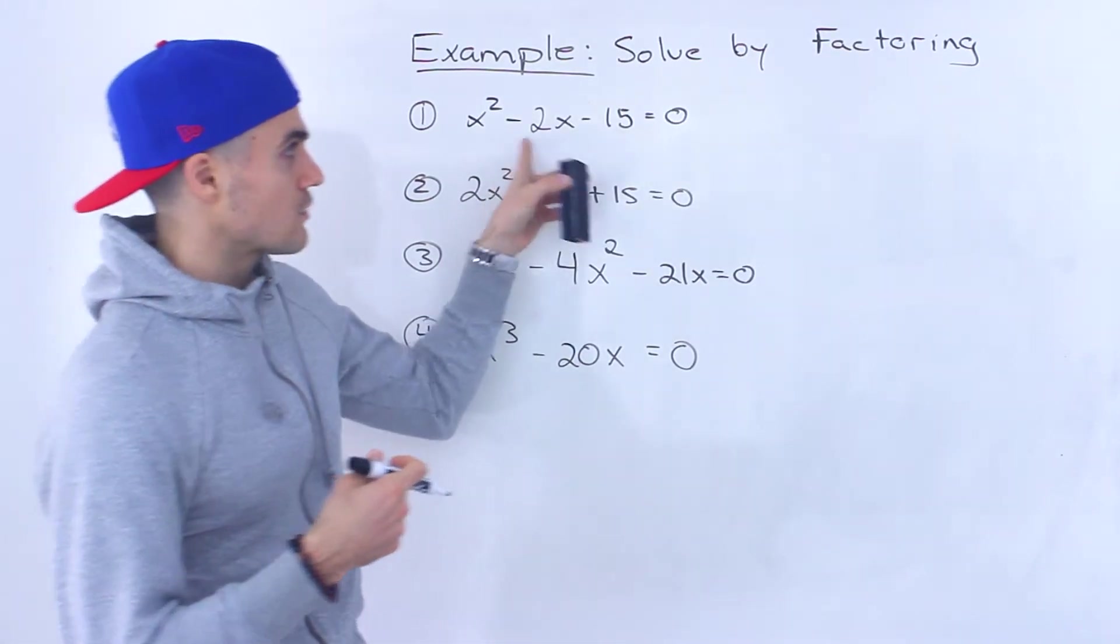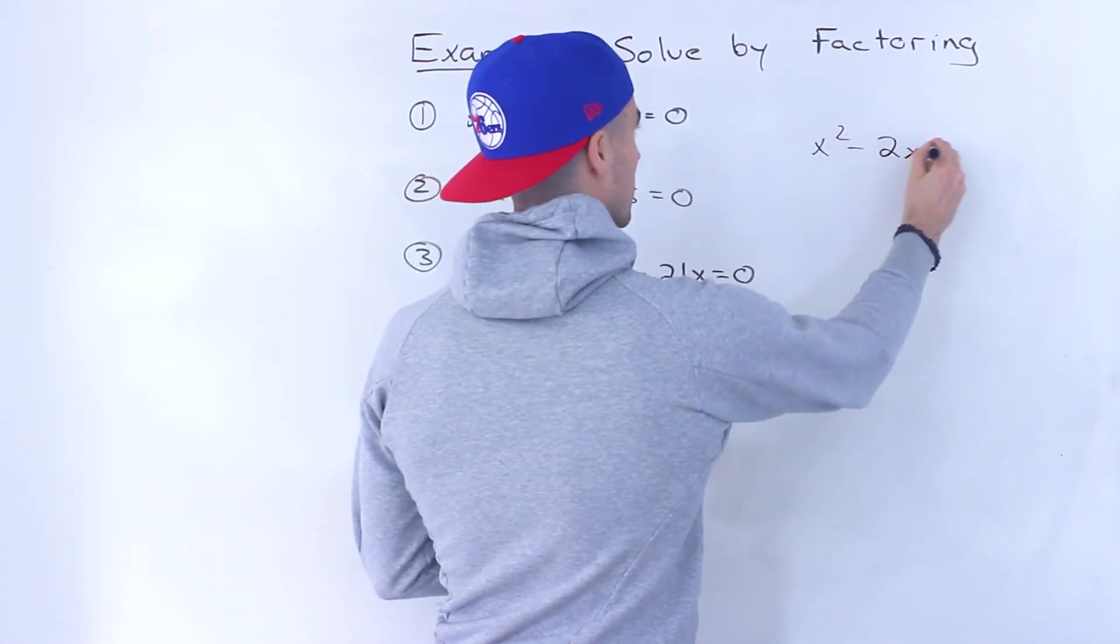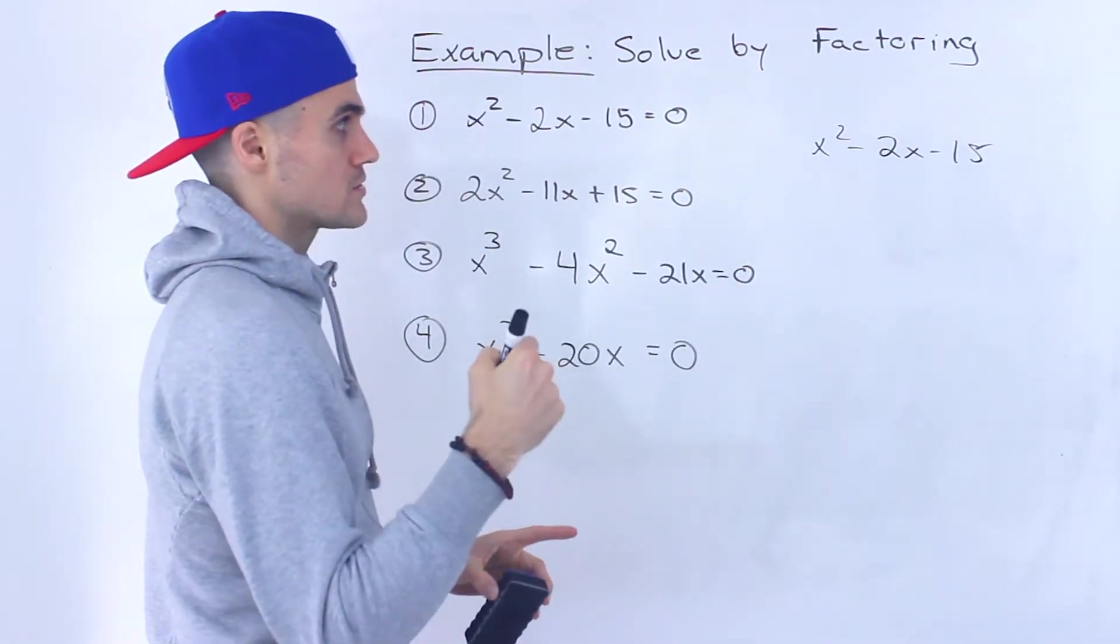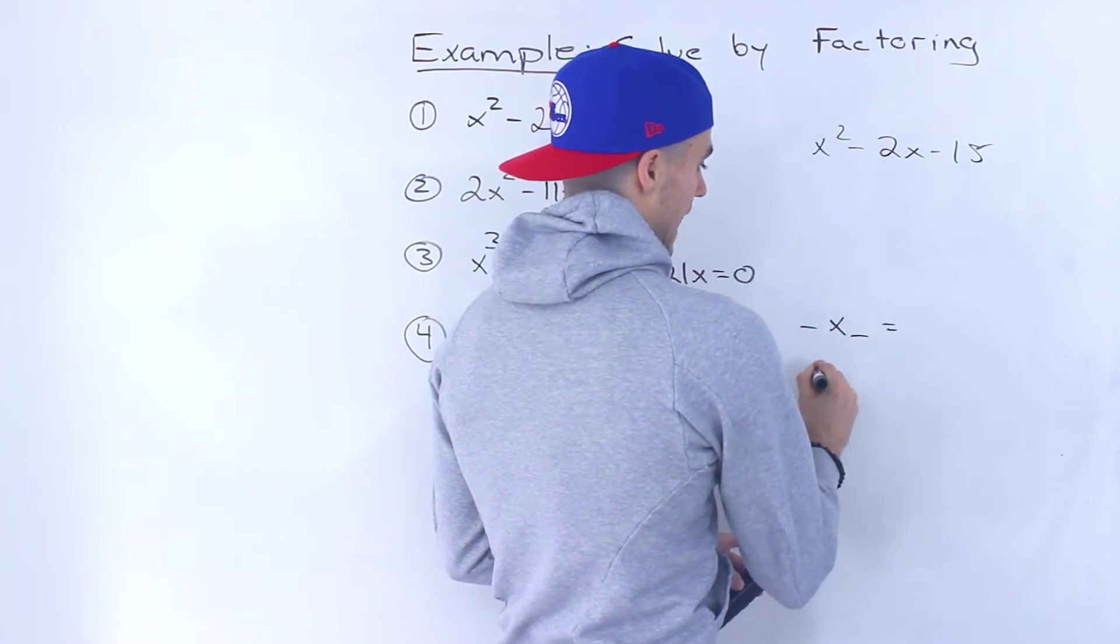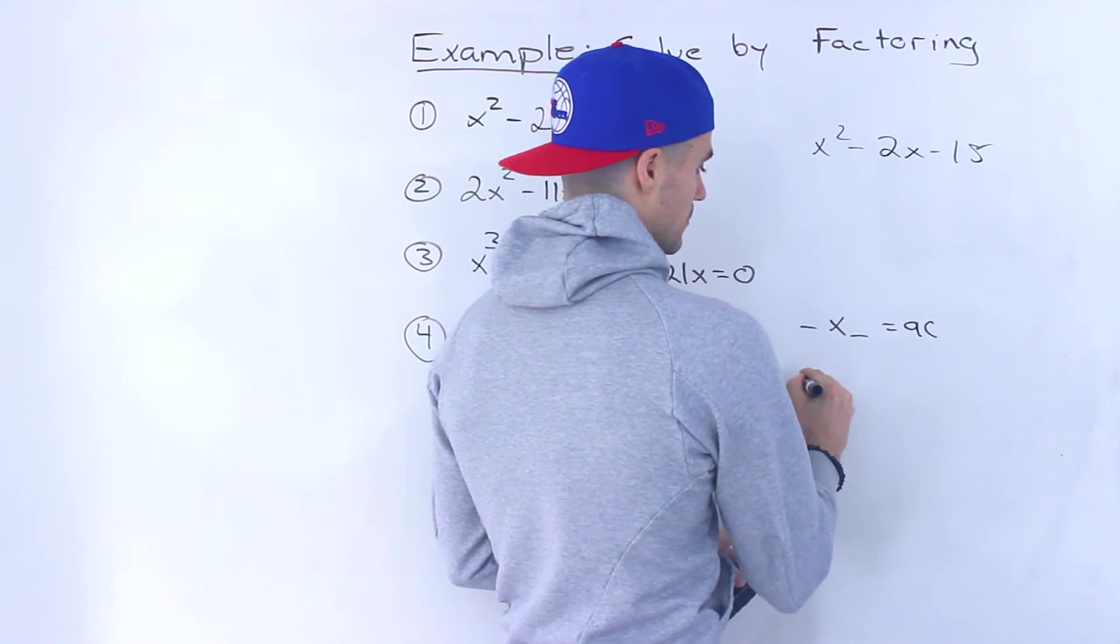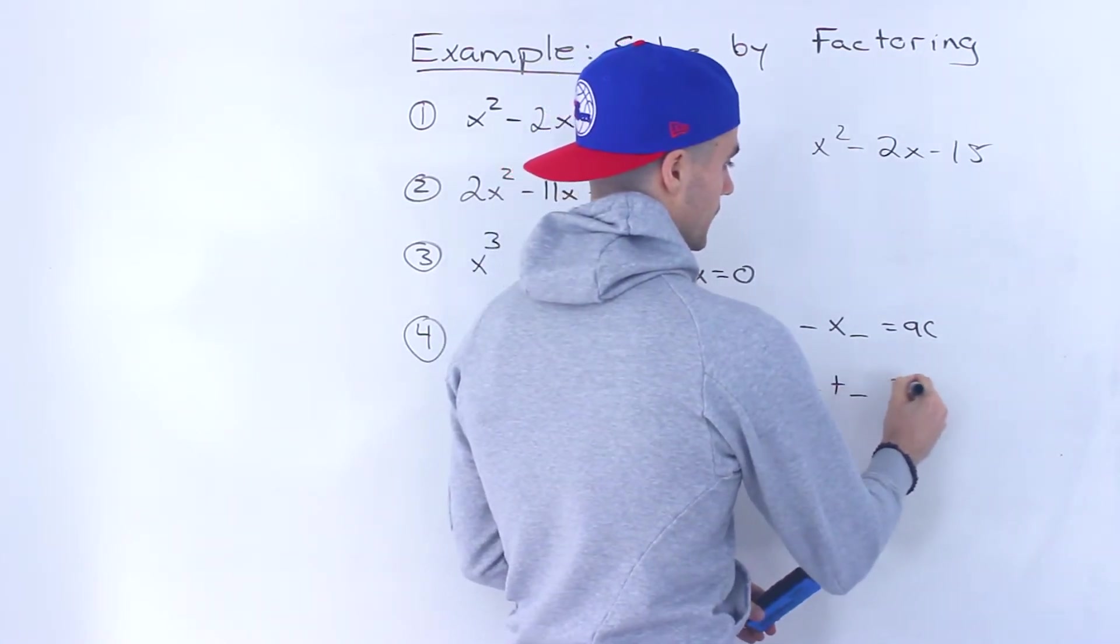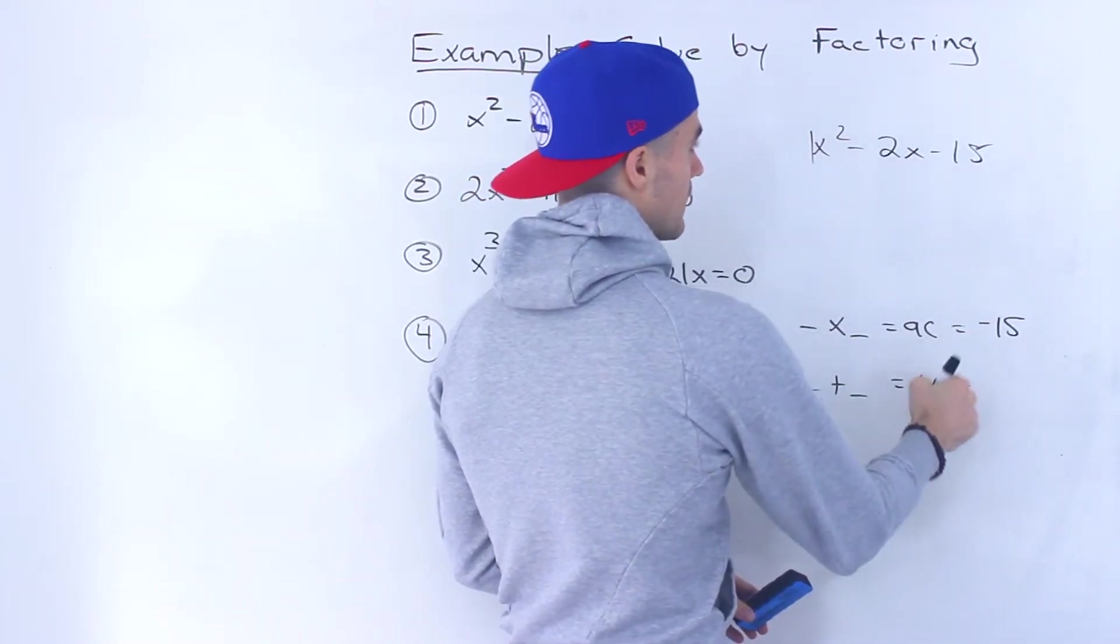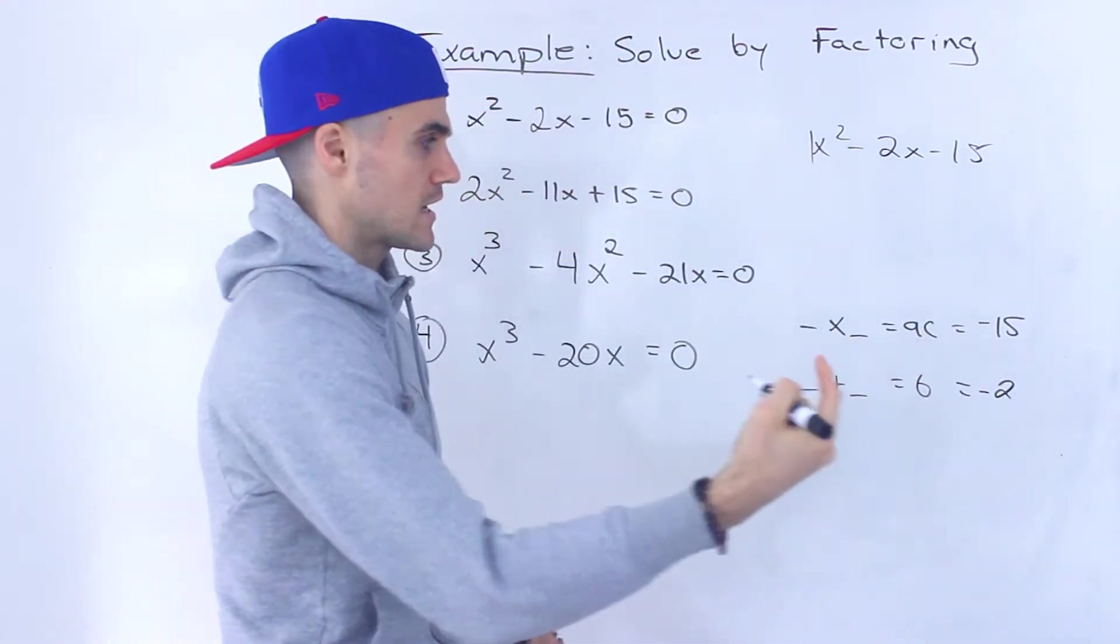I got x² - 2x - 15 = 0. I'm going to factor this quadratic with decomposition. So I'm going to find two numbers that multiply to a times c and add up to the b value. We'll have 1 times -15, which is -15, and the b value is -2. So what two numbers multiply to -15 and add up to -2?